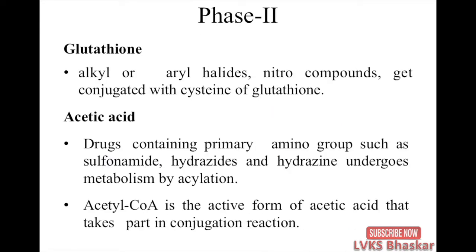Alkyl or aryl halides and nitro compounds get conjugated with the cysteine of glutathione. Drugs containing primary amino groups such as sulfonamides and hydrazides undergo metabolism by acetylation. Acetyl-CoA is the active form of acetic acid that takes part in the conjugation reaction — this process is called acetylation.